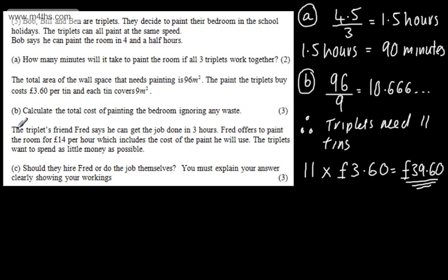We're now told the triplets' friend Fred says he can get the job done in three hours. Fred offers to paint the room for £14, which includes the cost of the paint he will use. The triplets want to spend as little money as possible. In part C, it asks: should they hire Fred, or do the job themselves? You must explain your answer clearly, showing your workings.